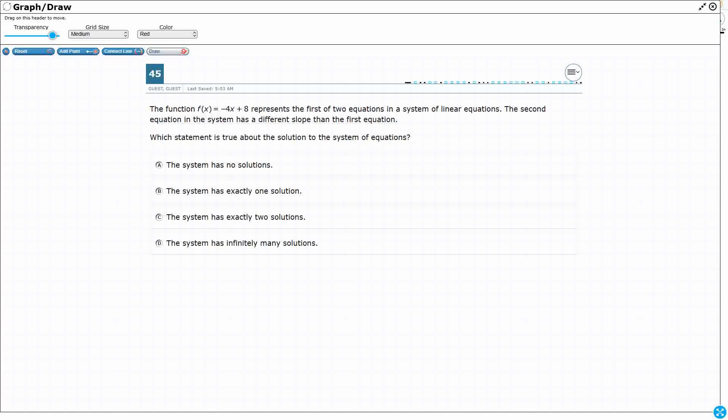So we've got one function, this f(x) = -4x + 8, so we have that in our slope-intercept form. It's a part of a system of linear equations, so we need two straight lines, but we don't know what the second equation is. All we know is that it has a different slope than the first equation. And now I've got to identify which statement is true. Does the system have no solutions, one solution, two solutions, or infinite solutions?